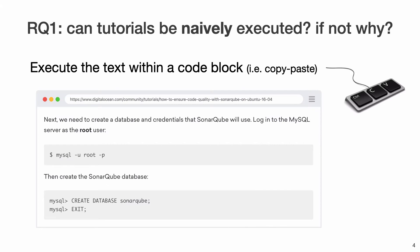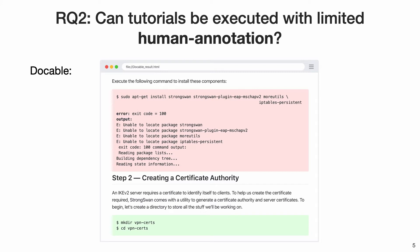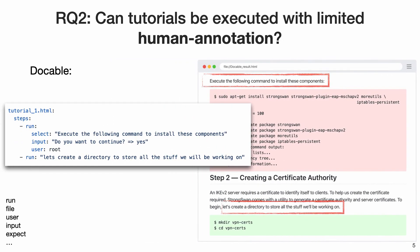First we try to execute tutorials using a naive approach, which is basically copying and pasting the code blocks as they appear in the tutorial. Next we try to use human annotations to distinguish between the code blocks in a tutorial. To do this we create Docable, which is a tool for selecting different code blocks in the tutorial and executing them using their types.